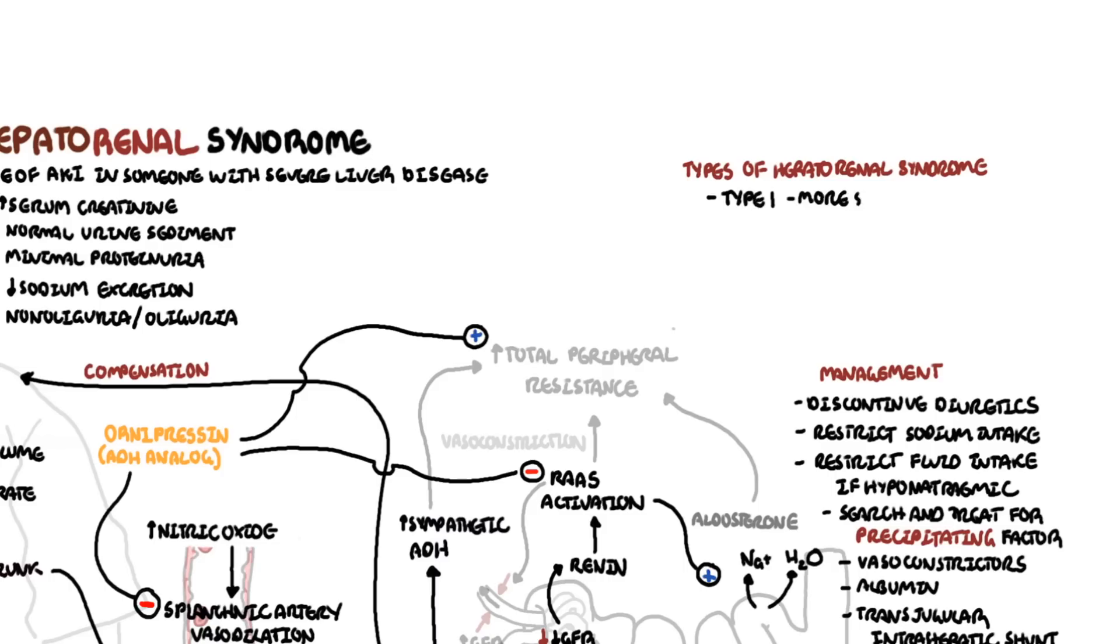Type 1 hepatorenal syndrome is the more serious type. It is defined as at least a two-fold increase in serum creatinine. It is also supported by the lack of improvement in kidney functions after withdrawal of diuretics and two days of volume expansion with intravenous albumin.